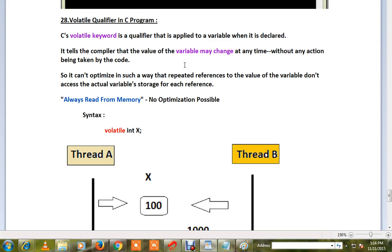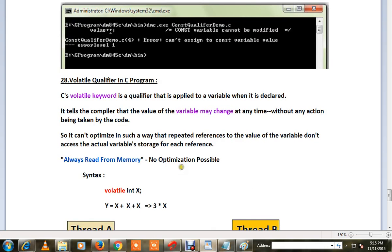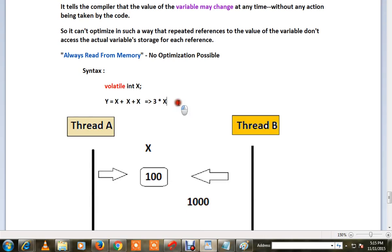Whenever you compile, the compiler will do some optimization in your code. For example, if you are doing Y = X + X + X, the compiler might convert this to 3 * X. I'm just giving an example. These types of optimization are not possible for volatile.